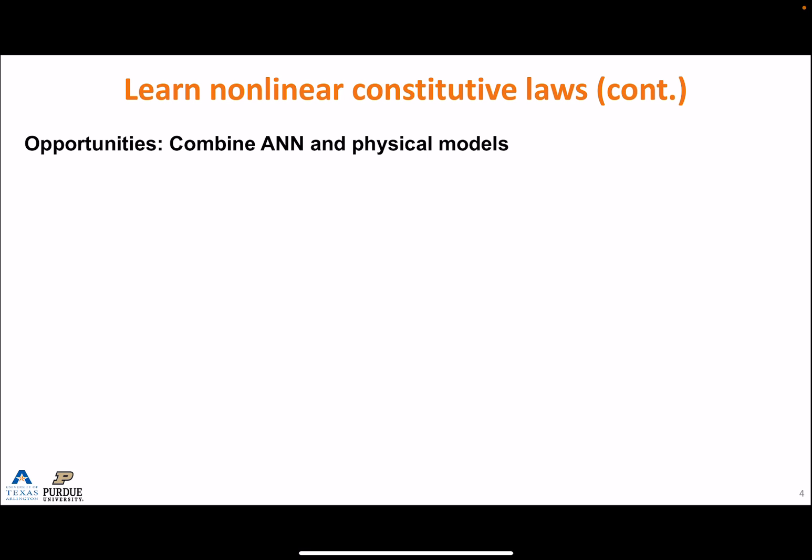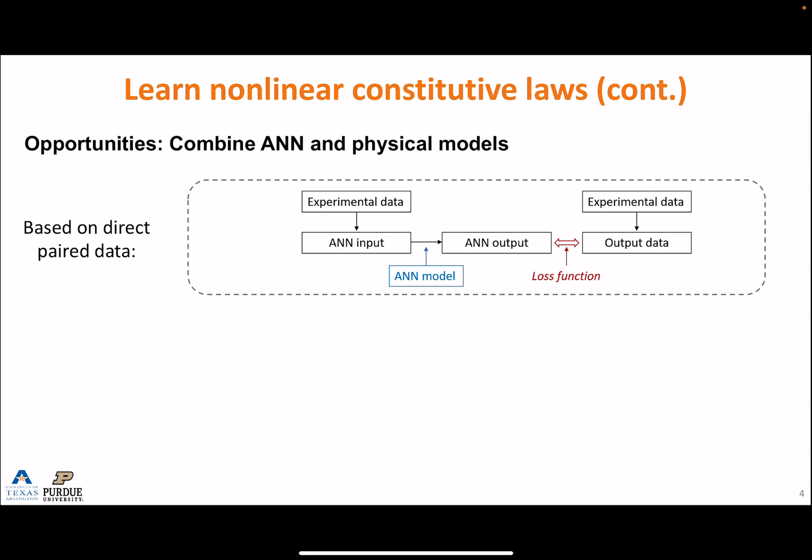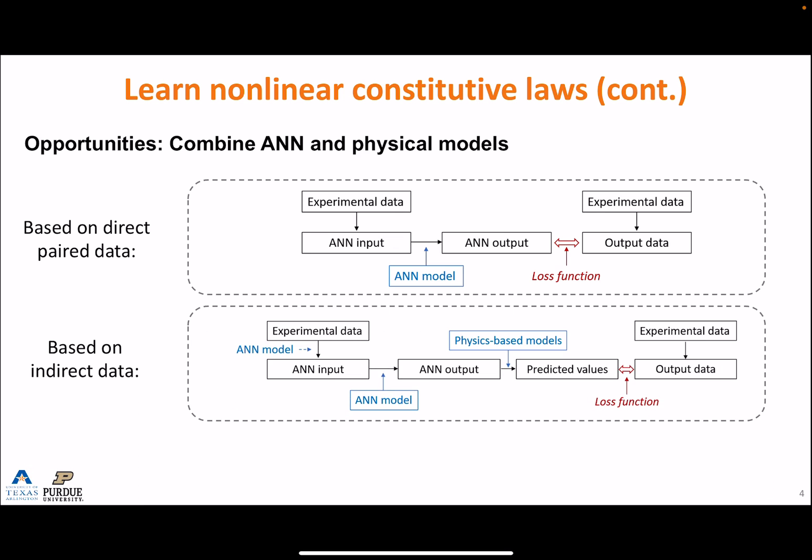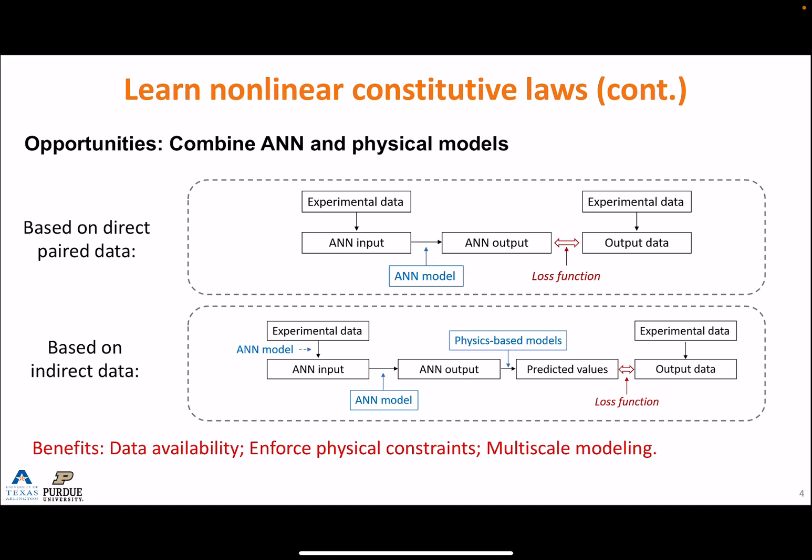One opportunity is to combine the ANN models with physical models. The common approach is where ANN input and output are either directly obtained from experiments or can be simply derived from experiments. This is why ANN-discovered constitutive laws often use data from simple coupon experiments. If we can make use of physics-based models, we can potentially use data from complex experiments. For example, the ANN output may feed into another physics-based model to predict values that can be measured from experiments. In this way, first, we can extend data availability. Second, we implicitly enforce physical constraints as hard constraints. Third, it enables us to solve more complex problems such as multiscale modeling. For example, we can learn the interface constitutive law based on measurable data from coupon tests.